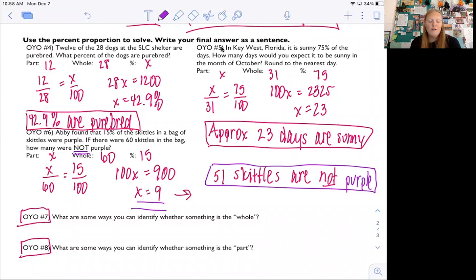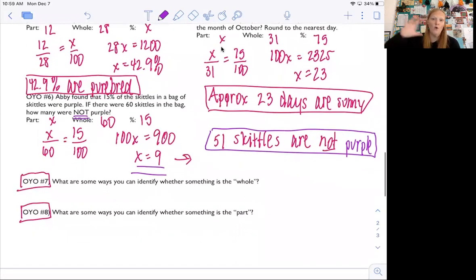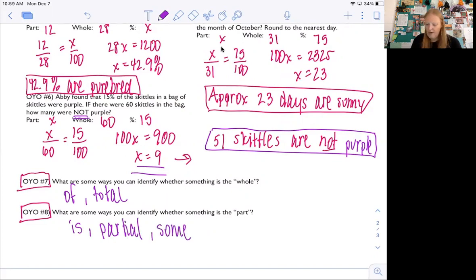All right. So the last ones, what are some ways you can identify whether something represents the whole? So looking for words like of or total are really helpful. They tell you that it's the entire thing. What are some ways you can identify the part? You look for the words is, and maybe you look for like partial or the word like some. So just little clues for that. So again, I know there are other ways to solve percent problems, and I want you to be able to show this on the test. So please solve either the green or the blue homework using the percent proportion. And then after the test, you can show me everything, you know. I'll talk to you later. Bye.